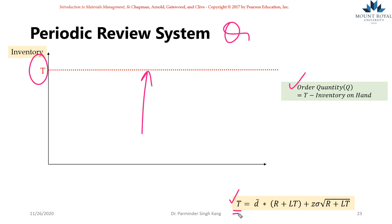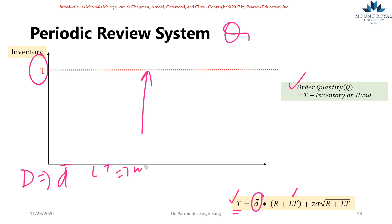T represents the maximum inventory, sometimes called the target inventory level. T is a function of D̄, the average demand during a period — per week, per day, per month. Don't treat this as capital D; capital D is the annual demand. D̄ and your lead time should be in the same units — either weeks or days. So if the lead time is given in weeks, D̄ is the average demand per week; if in days, average demand per day.